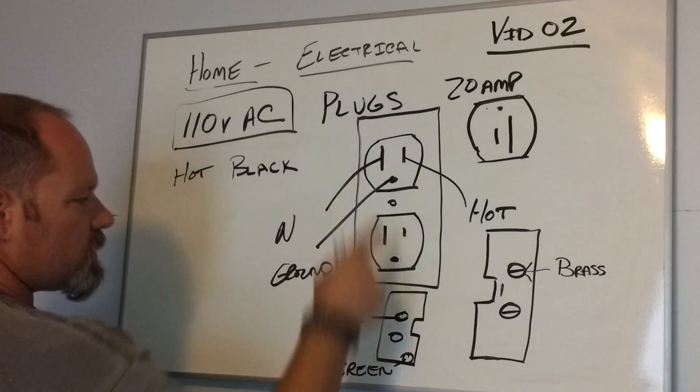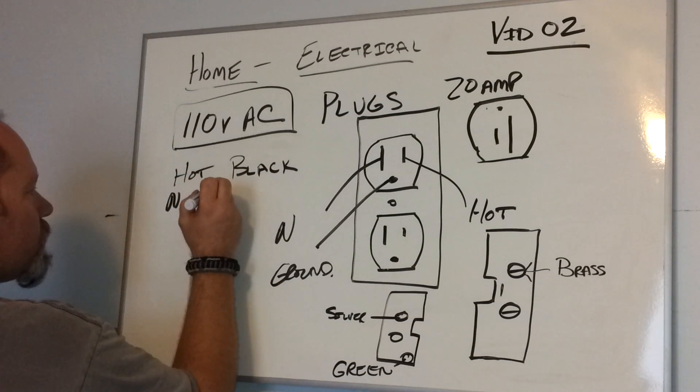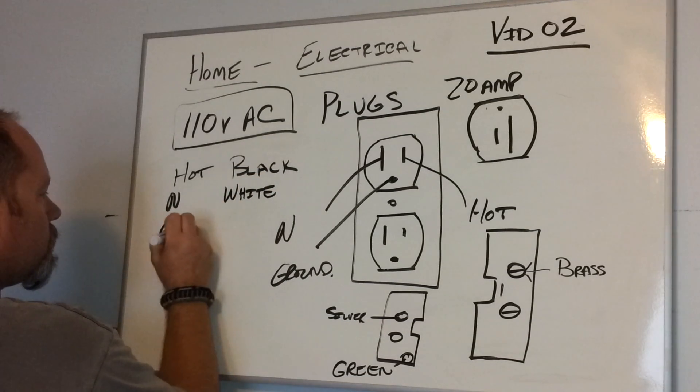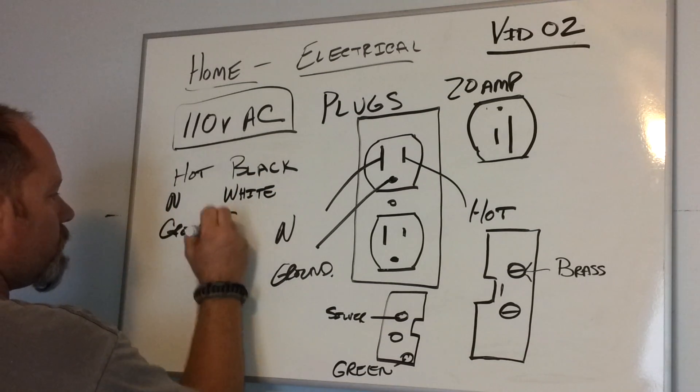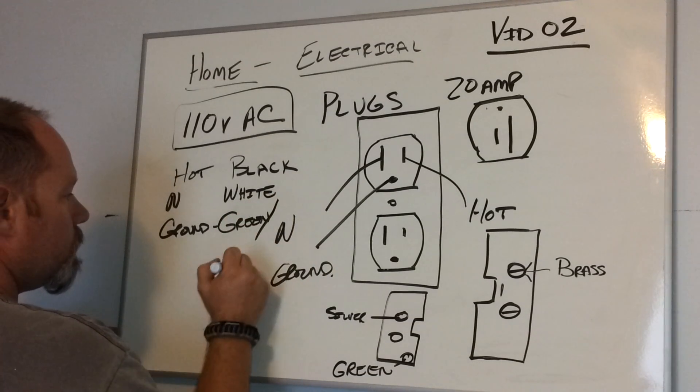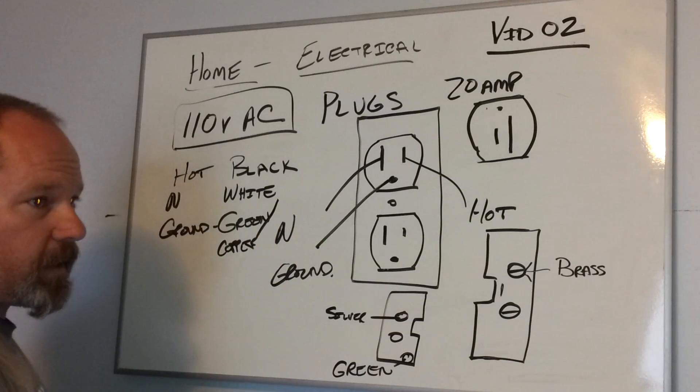The neutral wire, which is this side or the silver screw side, is going to be white. And the ground is going to be green or plain copper with no coating on it, either one.